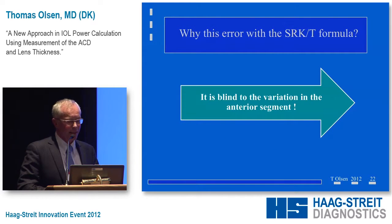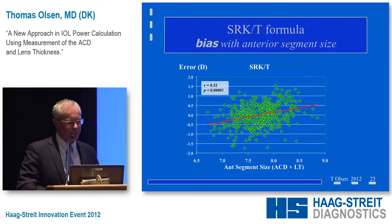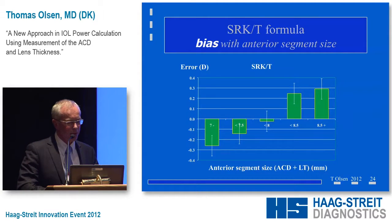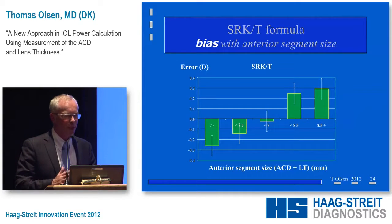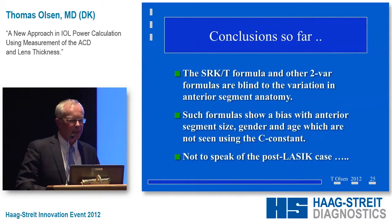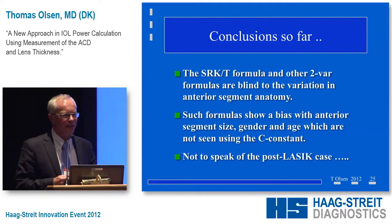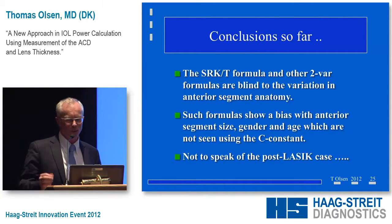Why do we have error with the SRKT? It is blind to the variation in the anterior segment. Plotting the SRKT error against the anterior segment size — which is the ACD plus the lens thickness — there is a significant correlation, meaning this formula has a bias. The span of the error is 0.6 diopters, from minus 0.3 to plus 0.3 depending on anterior segment size. All formulas that take only the K and the axial length reading have a bias with the anterior segment size — and this is also very valid for post-LASIK cases.